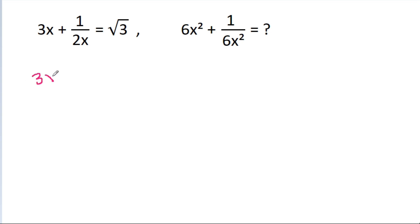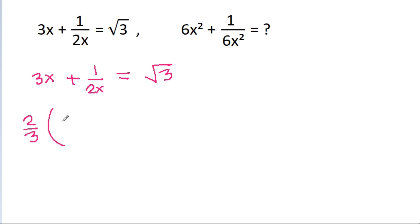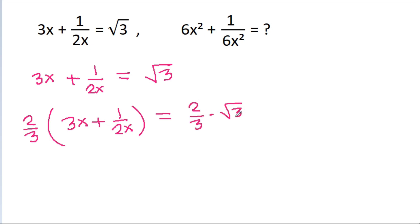We have given that 3x plus 1 by 2x is equal to root 3. If we multiply both sides by 2 by 3, then 2 by 3 times 3x plus 1 by 2x will be equal to 2 by 3 times root 3. So 2x plus 1 by 3x will be equal to 2 root 3 by 3.